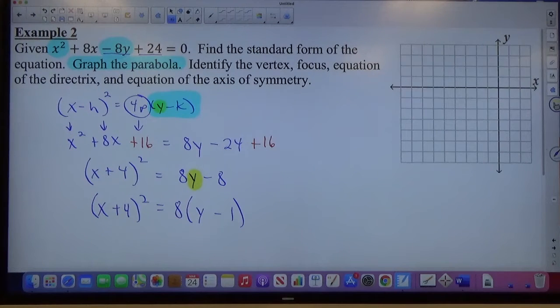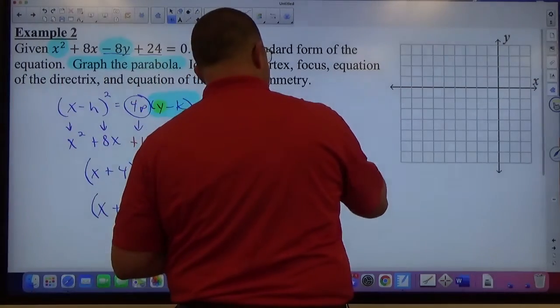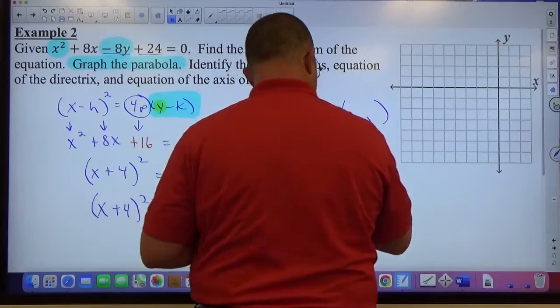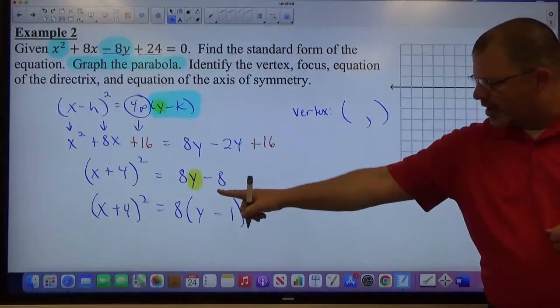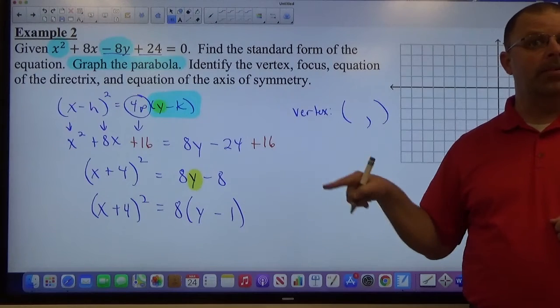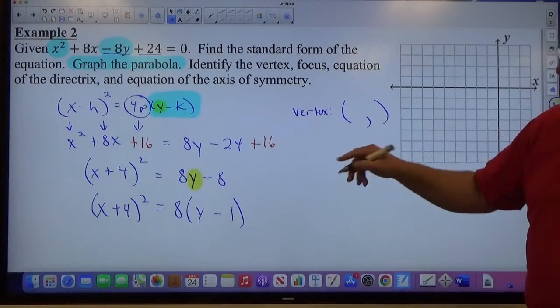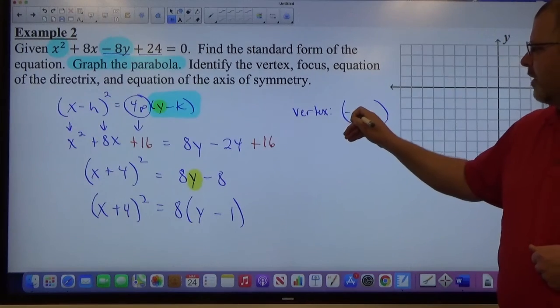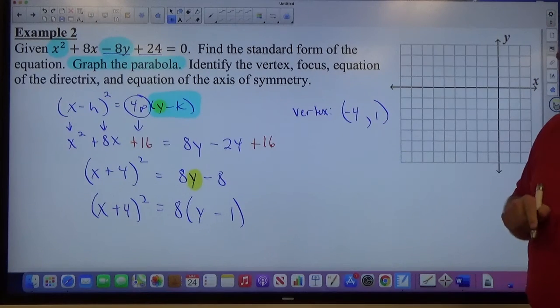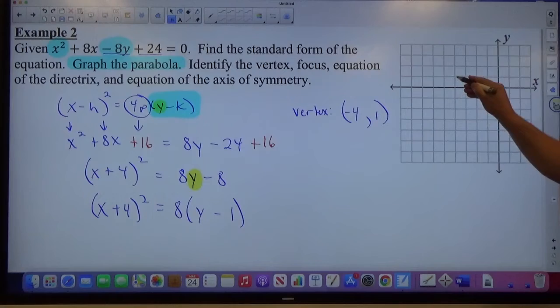Our standard form tells us everything we need to know to find the vertex information. We're going to identify, graph the parabola, identify all the stuff. So the vertex: we've got our x number and our y number. But the numbers in the standard form are the opposite sign of what they should be. So x is paired with positive 4, so x is negative 4. y is paired with negative 1, so y is positive 1. Negative 4, 1 is my vertex.